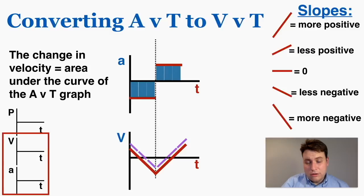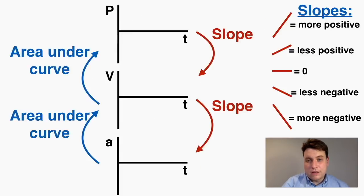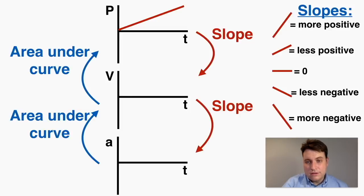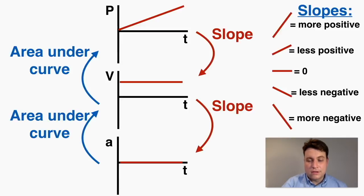Now I'll go through examples of converting through all three graphs — being given just one and getting the other two through graph translation. This is an essential skill and you'll be working on a worksheet on this shortly. If you have a simple position graph with a positive constant slope, the velocity is positive and constant — a flat line. And if that velocity graph is flat, the slope of velocity is zero, so the acceleration graph is just at zero the whole time.